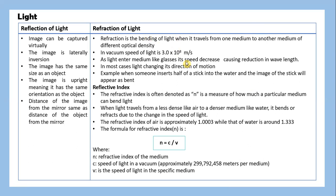Refraction of light. Refraction is the bending of light when it travels from one medium to another medium of different optical density. In vacuum, speed of light is 3 times 10 to the power of 8 meters per second. As light enters medium like glass, its speed decreases, causing reduction in wavelength. In most cases, light changes its direction of motion.